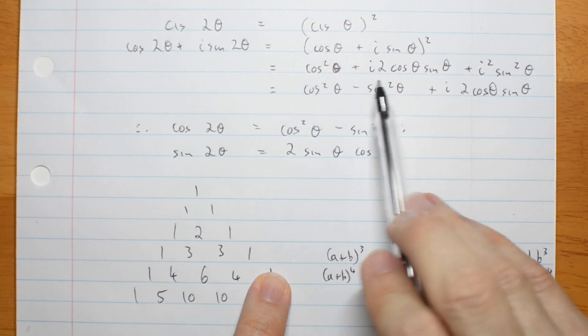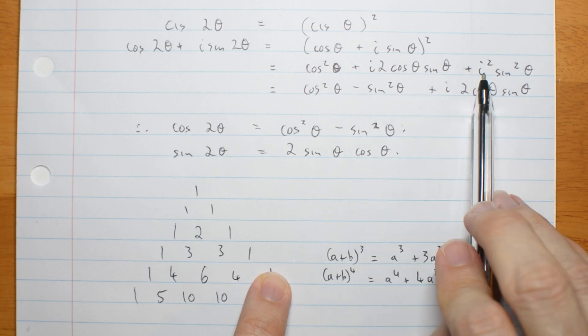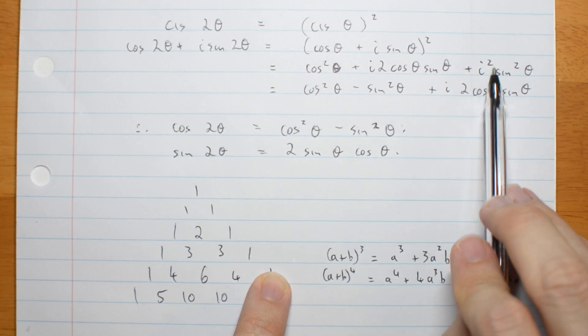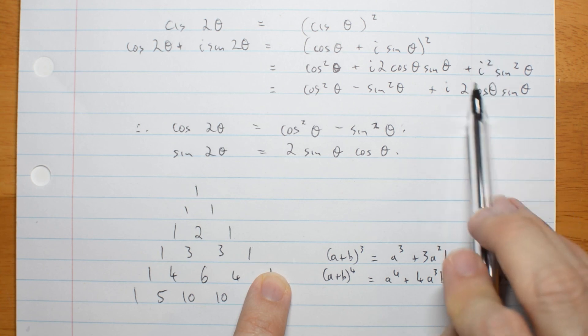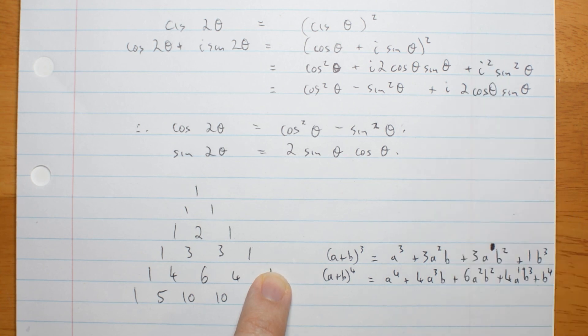Which you're then going to substitute in here with the i's, i squareds, i cubes, etc. And then you're going to have to simplify your i squareds, i cubes, i the 4th and so on. Have a go.